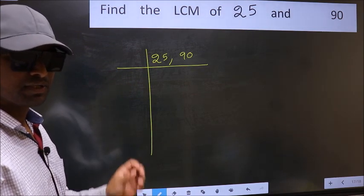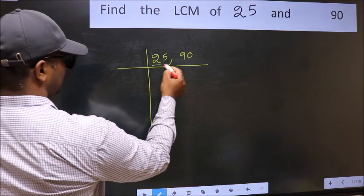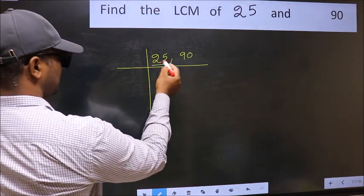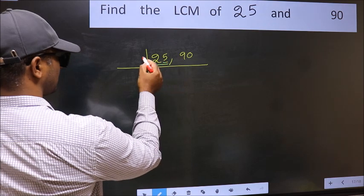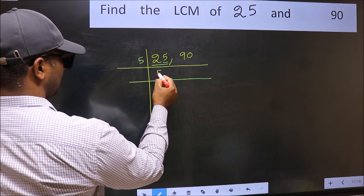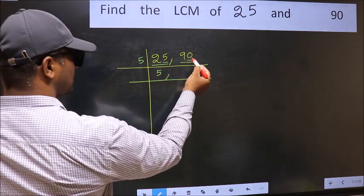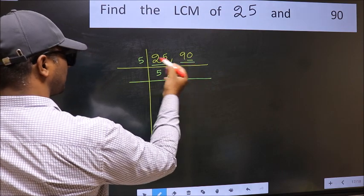Now you should focus on the first number, which is 25 here. In this number, the last digit is 5, so take 5. When do we get 25 in the 5 table? 5 times 5 is 25. The other number, 90, has last digit 0, so this is divisible by 5.